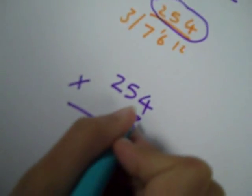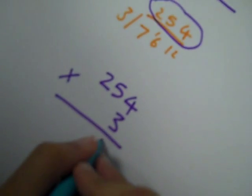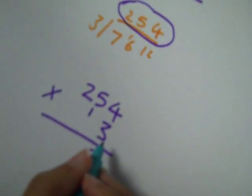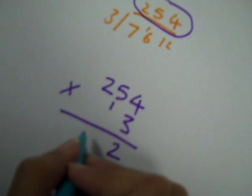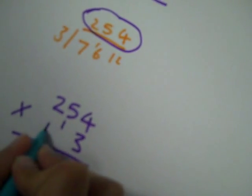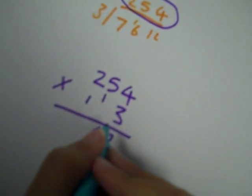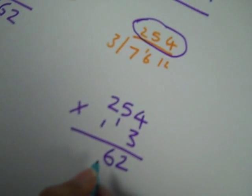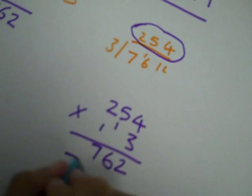3 times 4 is 12. I'm going to carry the 1 and make it small. 3 times 5 is 15. Add the 1, it's 16. 3 times 2 is 6. Add the 1 and it's 7. And your answer is 762.